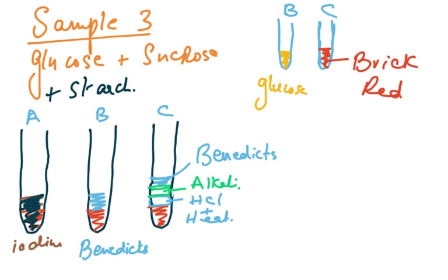Divide sample 3 into three portions in three test tubes labeled 3A, 3B, and 3C. Always label test tubes when working in the lab. In test tube 3A, add iodine. In test tube 3B, add Benedict's solution, heat in a water bath, and observe the color change — it will likely turn yellow or orange.